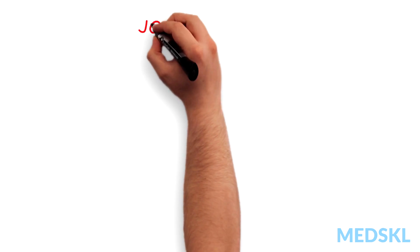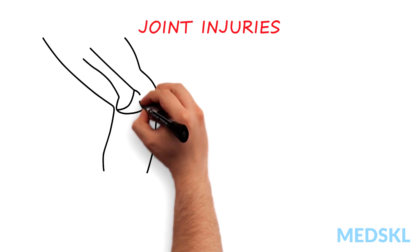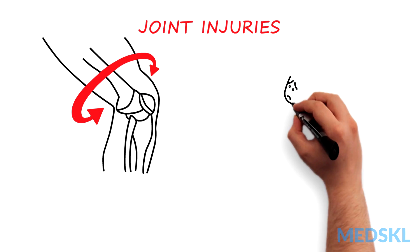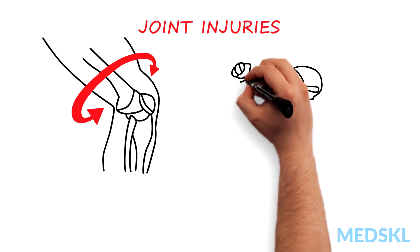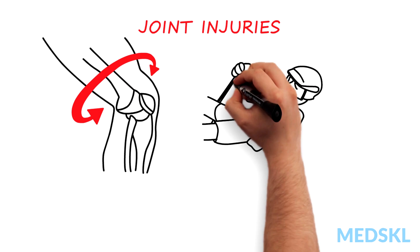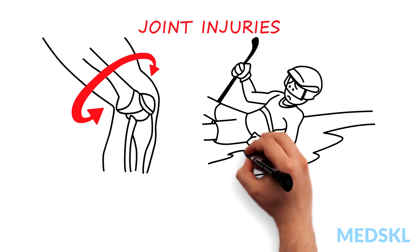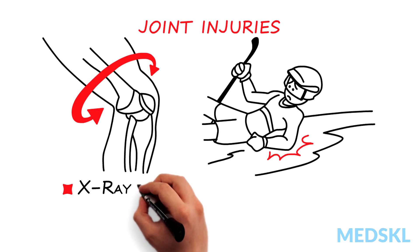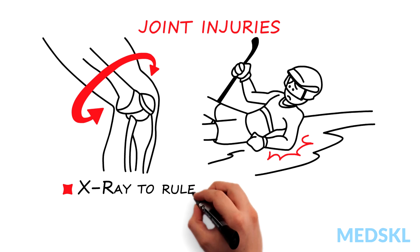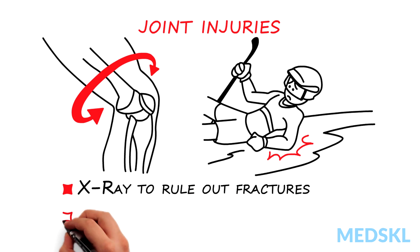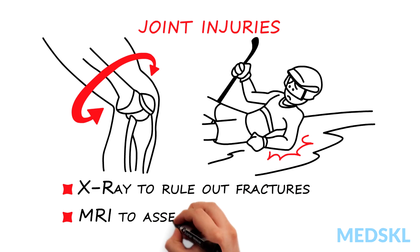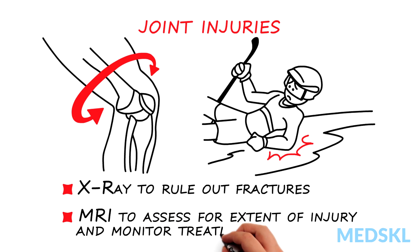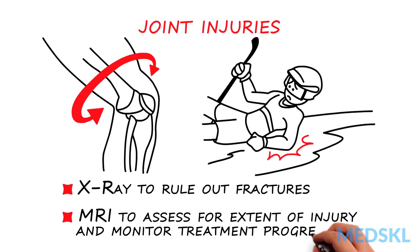Joint injuries frequently occur from twisting injuries to the knee or ankle, or a fall causing injury or dislocation of the shoulder or elbow. Workup of joint injuries involves x-rays to rule out fractures and sometimes MRI to assess for extent of injury and monitor treatment progress.